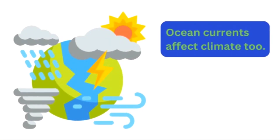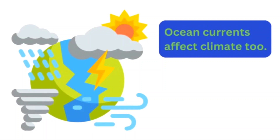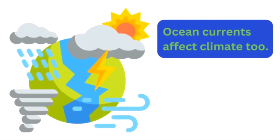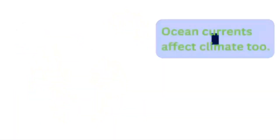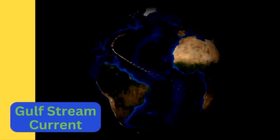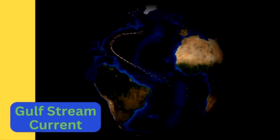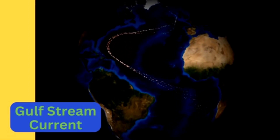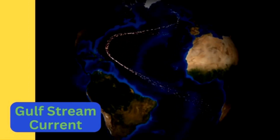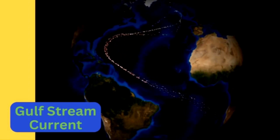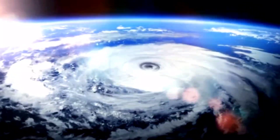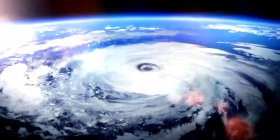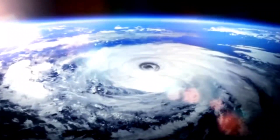Ocean currents can affect climate and weather too. Warm water currents evaporate into the air and form storm clouds. One famous warm water current is the Gulf Stream. It is famous because it flows across the Atlantic Ocean starting near Africa. The Gulf Stream often causes hurricanes to build up. The storms follow the current all the way to North America and then over to England, which affects the climate in parts of Europe.